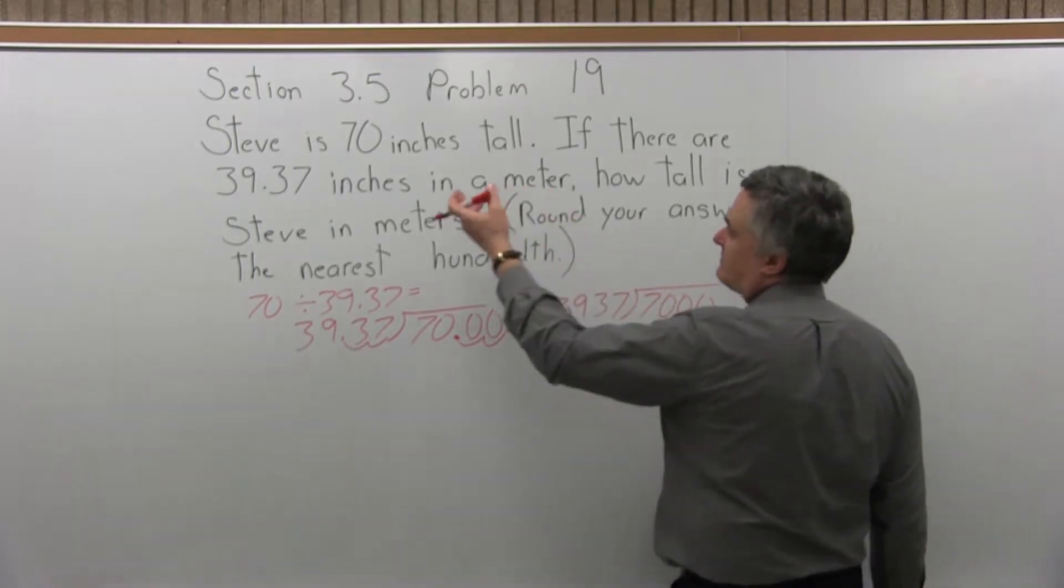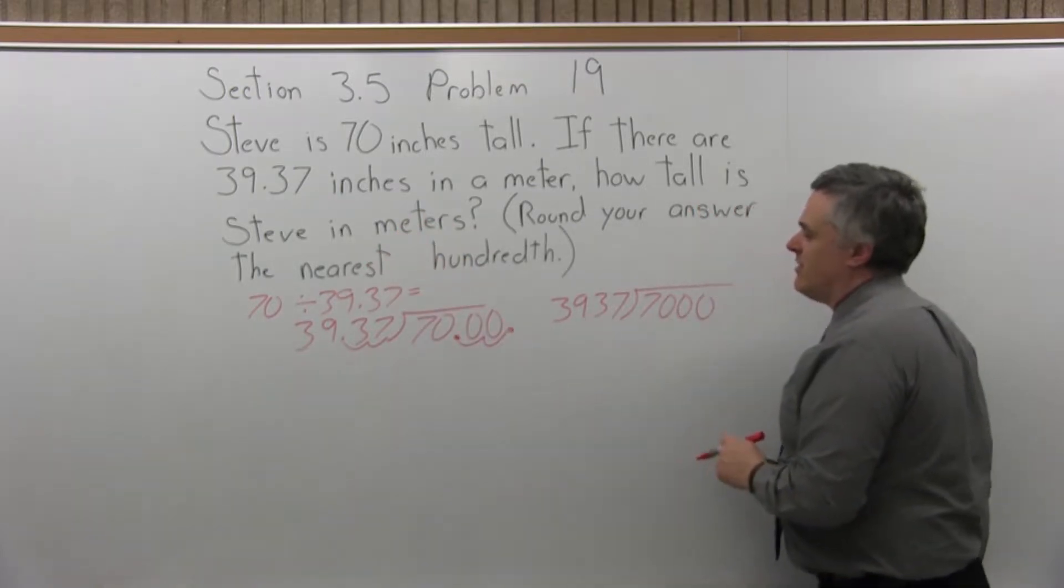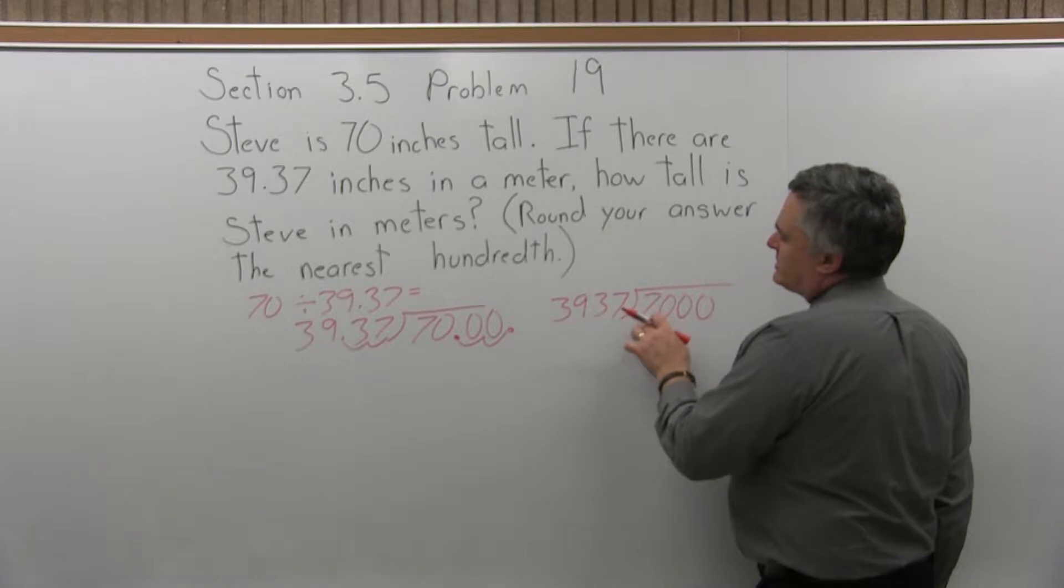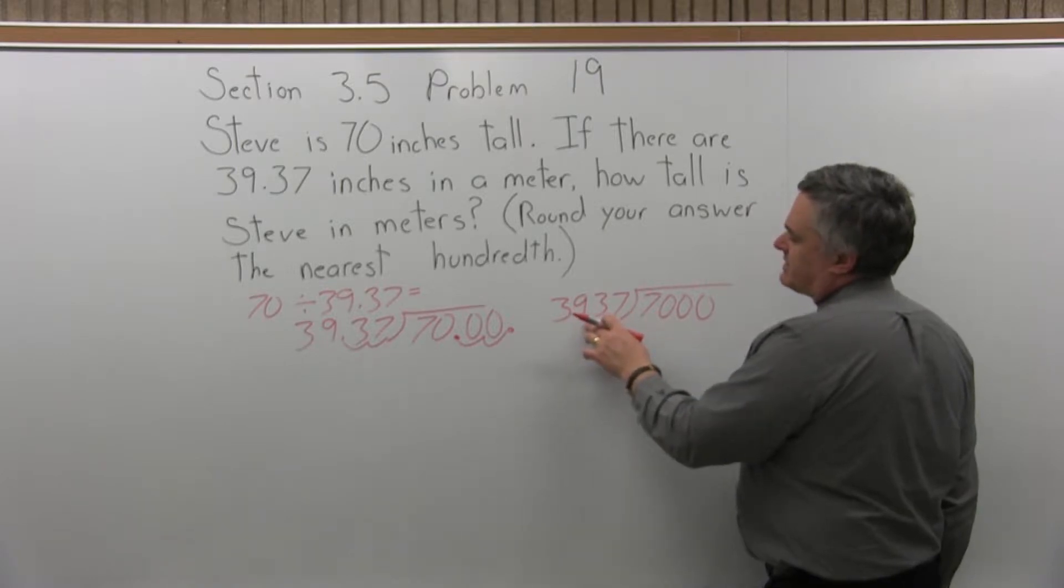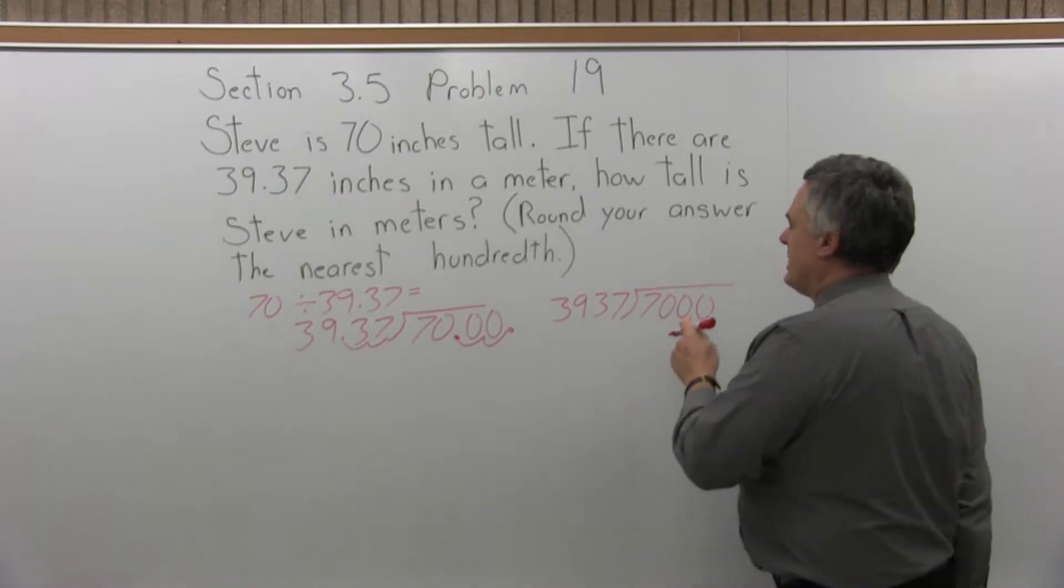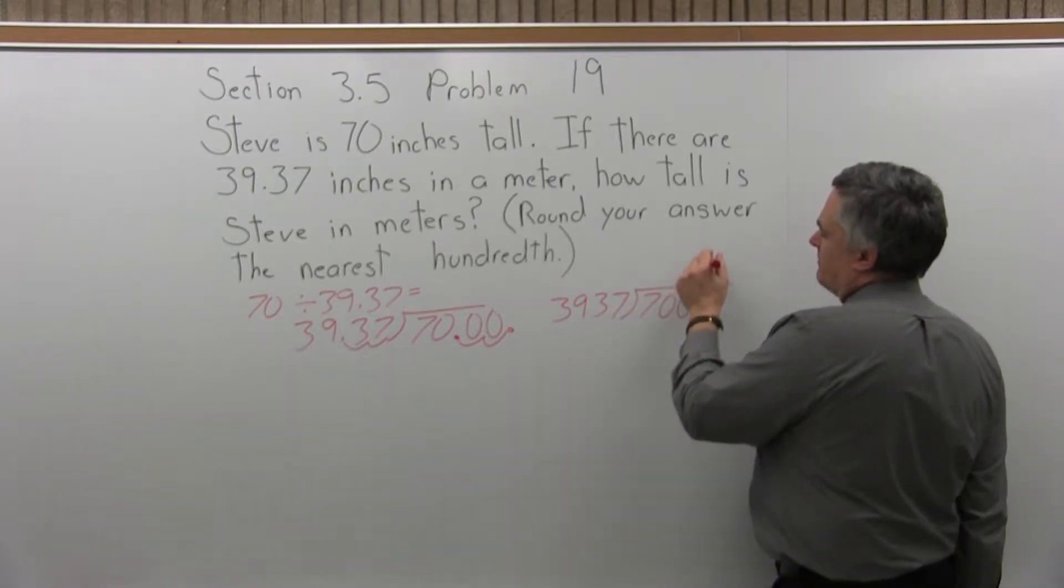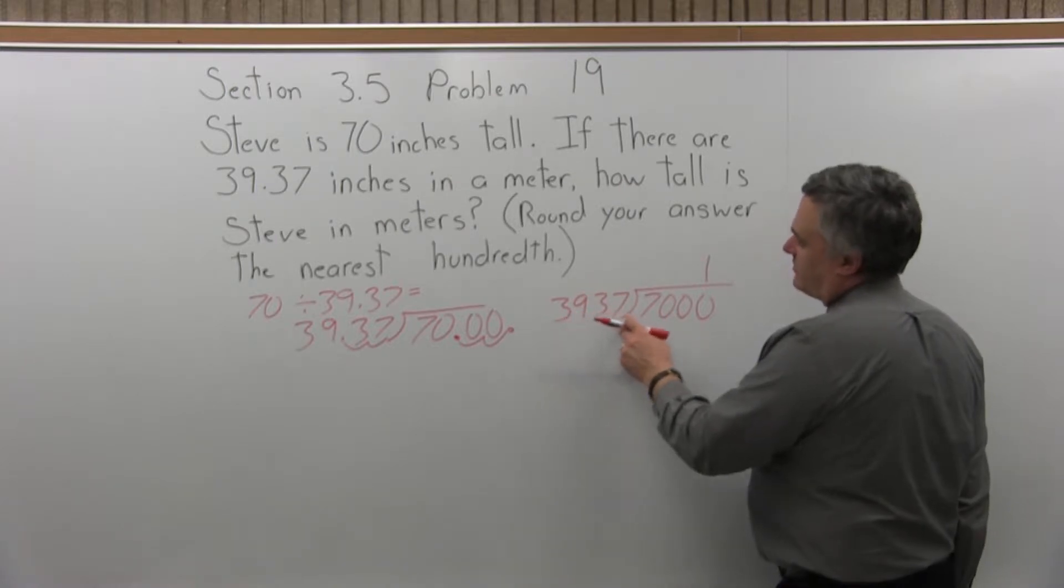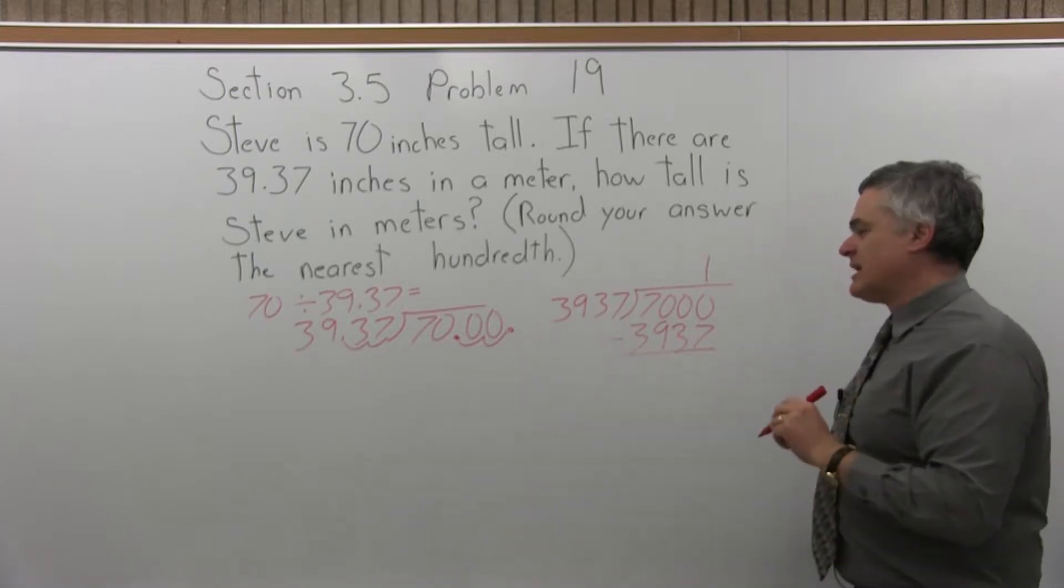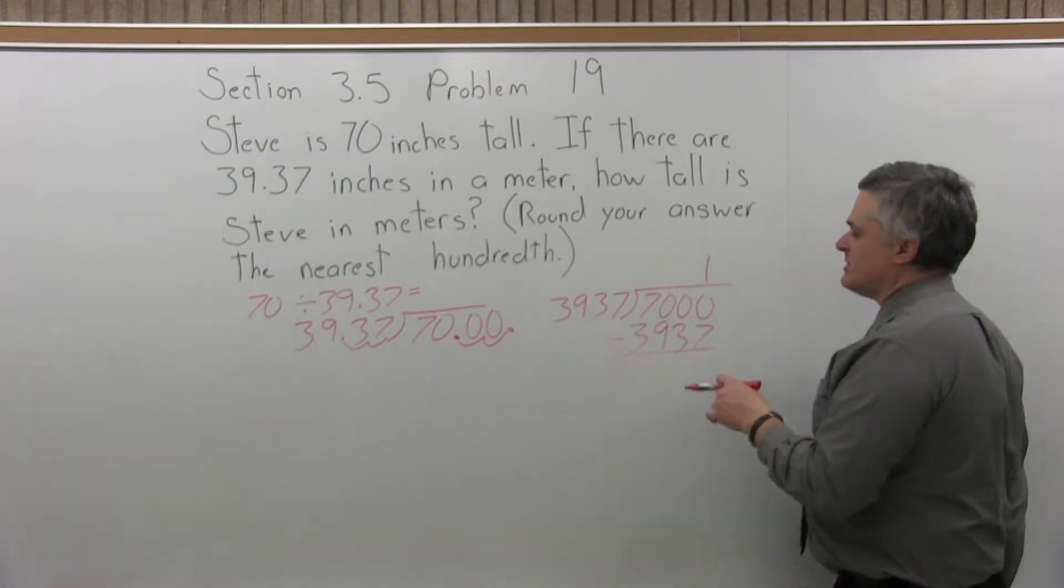So again, it's only really going to fit in once, because if I do times two, it would be almost 8000. Two is too big. So 1 times 3937 is 3937, and I have to subtract 7000 minus 3937. They're fairly big numbers.